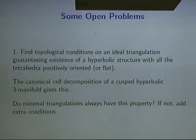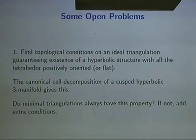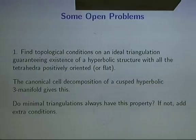If you start with any triangulation, can you modify it in some systematic way to get to a good triangulation which will satisfy this? If you have a cusp hyperbolic 3-manifold, the canonical cell decomposition gives you this kind of thing, possibly with flat tetrahedra. But we'd like to be able to do this without knowing the hyperbolic structure to start with, just starting from a combinatorial description of the manifold.